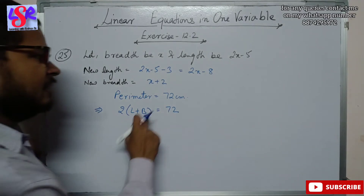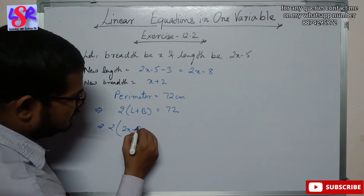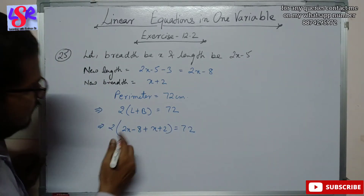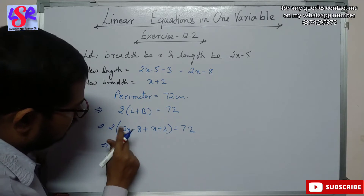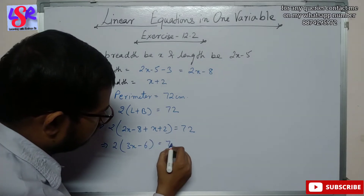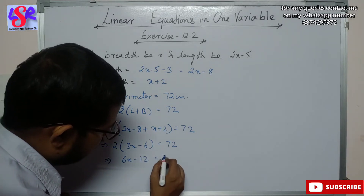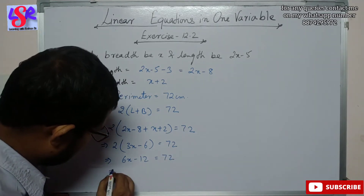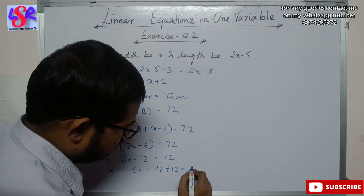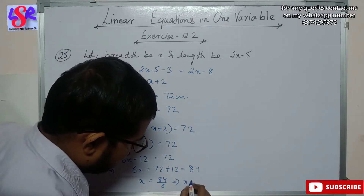Placing the values of l and b, we get 2 into (2x minus 8 plus x plus 2) equals 72. Solving the bracket: 2 into (3x minus 6) equals 72, which gives 6x minus 12 equals 72. Transposing: 6x equals 72 plus 12, that is 84. So x equals 84 divided by 6, which gives x equals 14 centimeters.